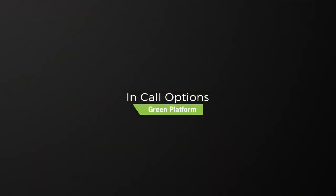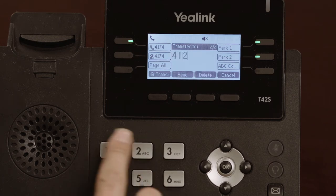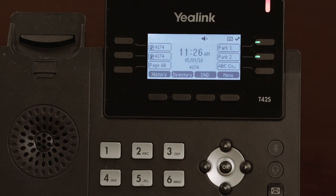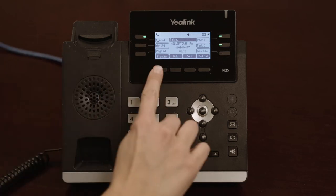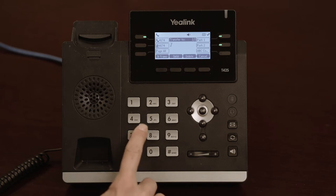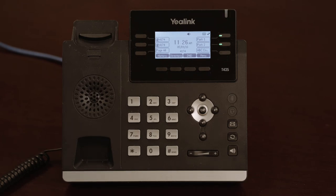To send your live call to another extension or phone number, you may transfer it. To send the call directly, press the transfer button, then input the phone number or extension you wish to send them to. Press the B Trans button, which stands for blind transfer, and the call will be transferred immediately. To send your call directly into an extension's voicemail box without ringing their phone first, press the transfer soft key, then type in 7 plus their extension. For example, to send the call to extension 4-1-2-1's voicemail, you would type 7-4-1-2-1, then the blind transfer button again. This will send the call directly to that extension's voicemail box — useful if they're in a meeting or simply unavailable.